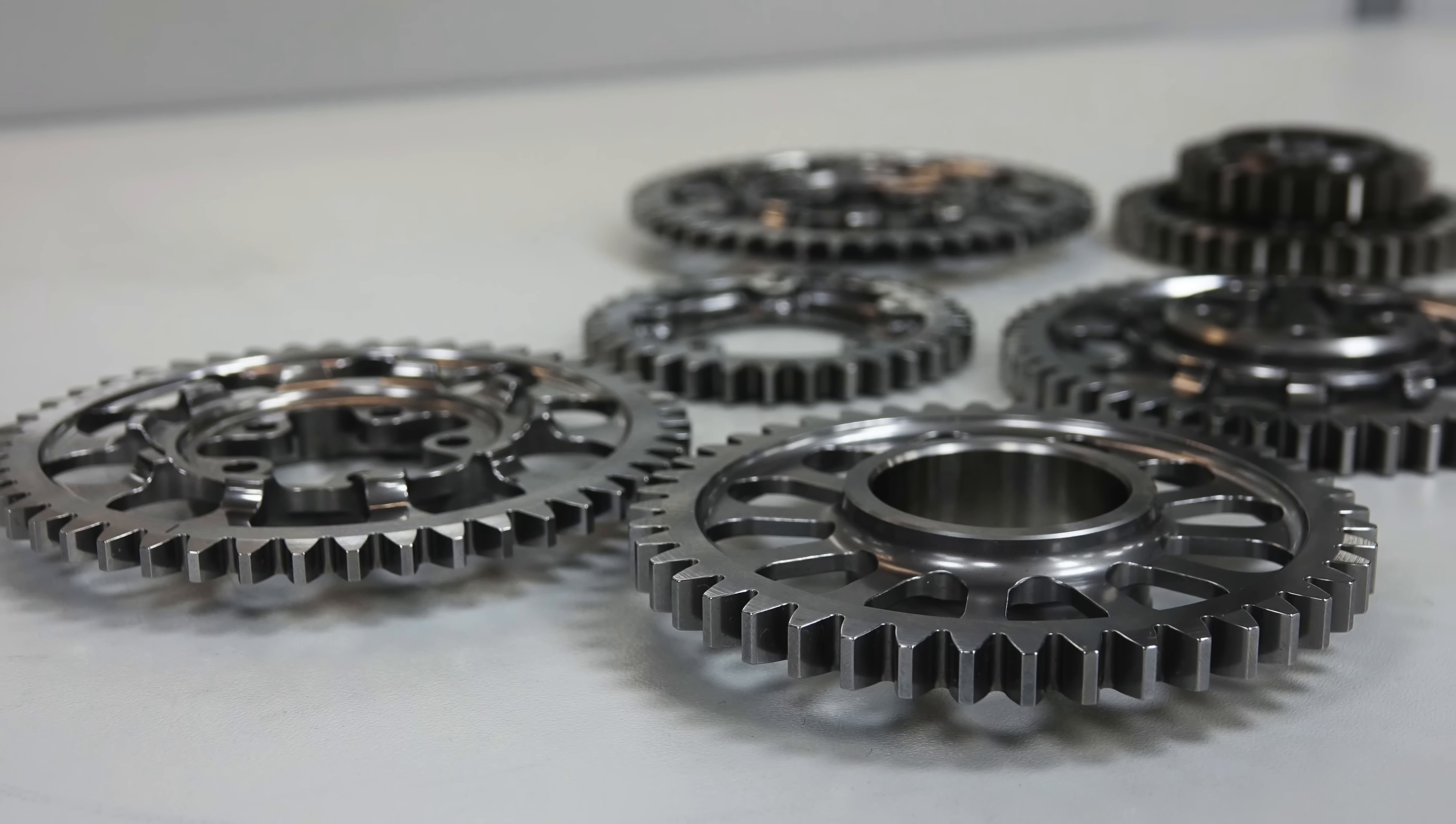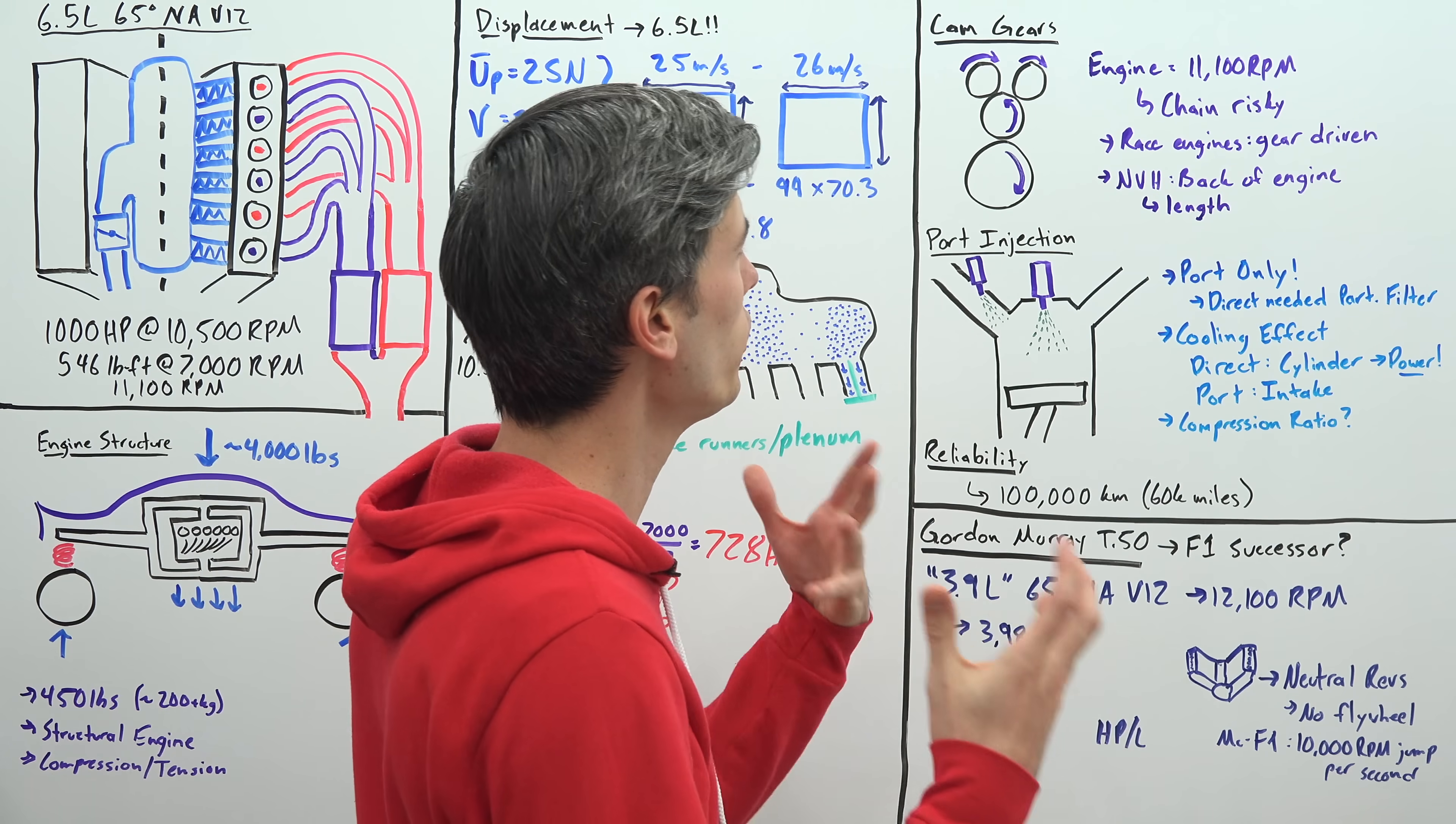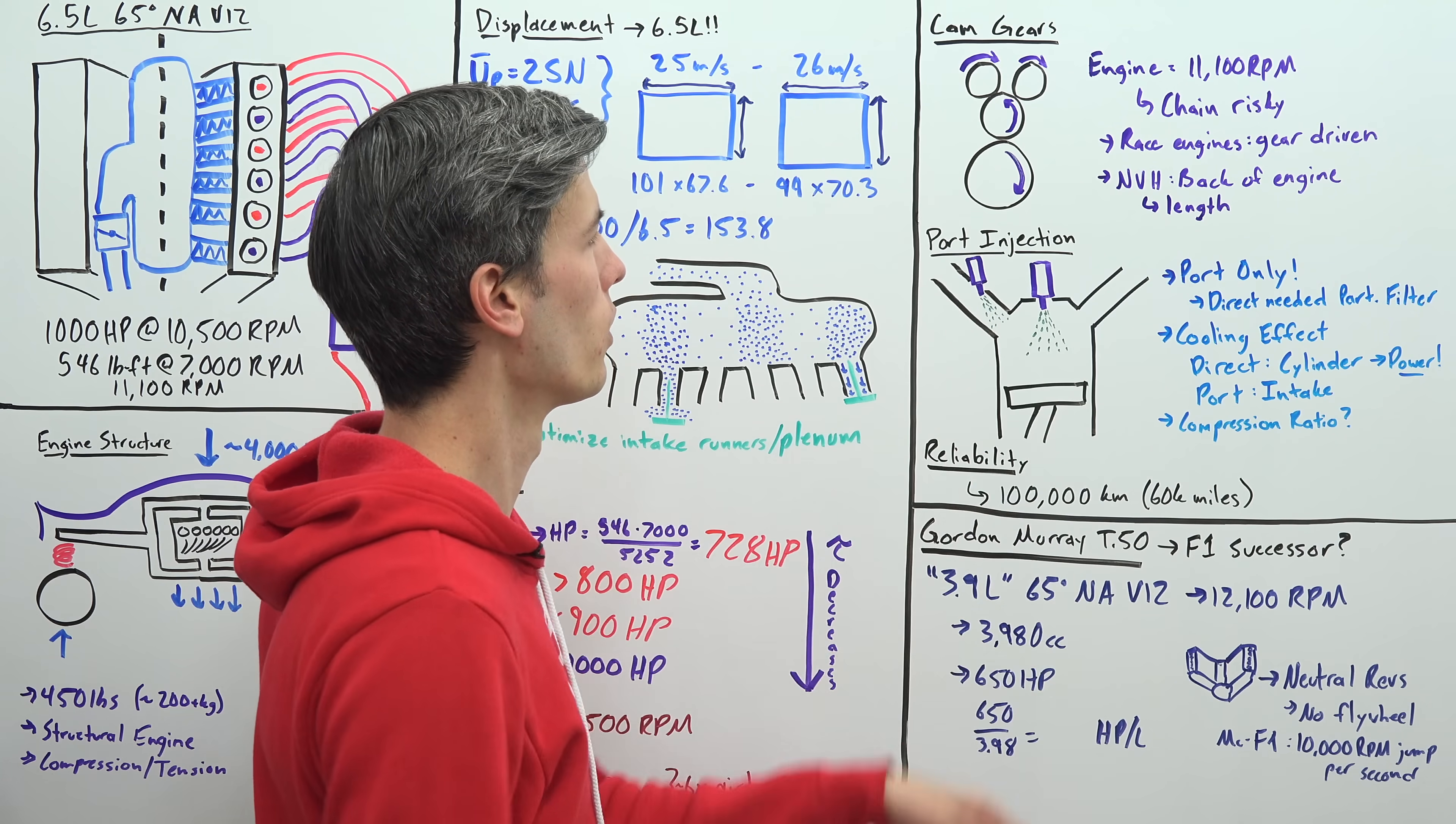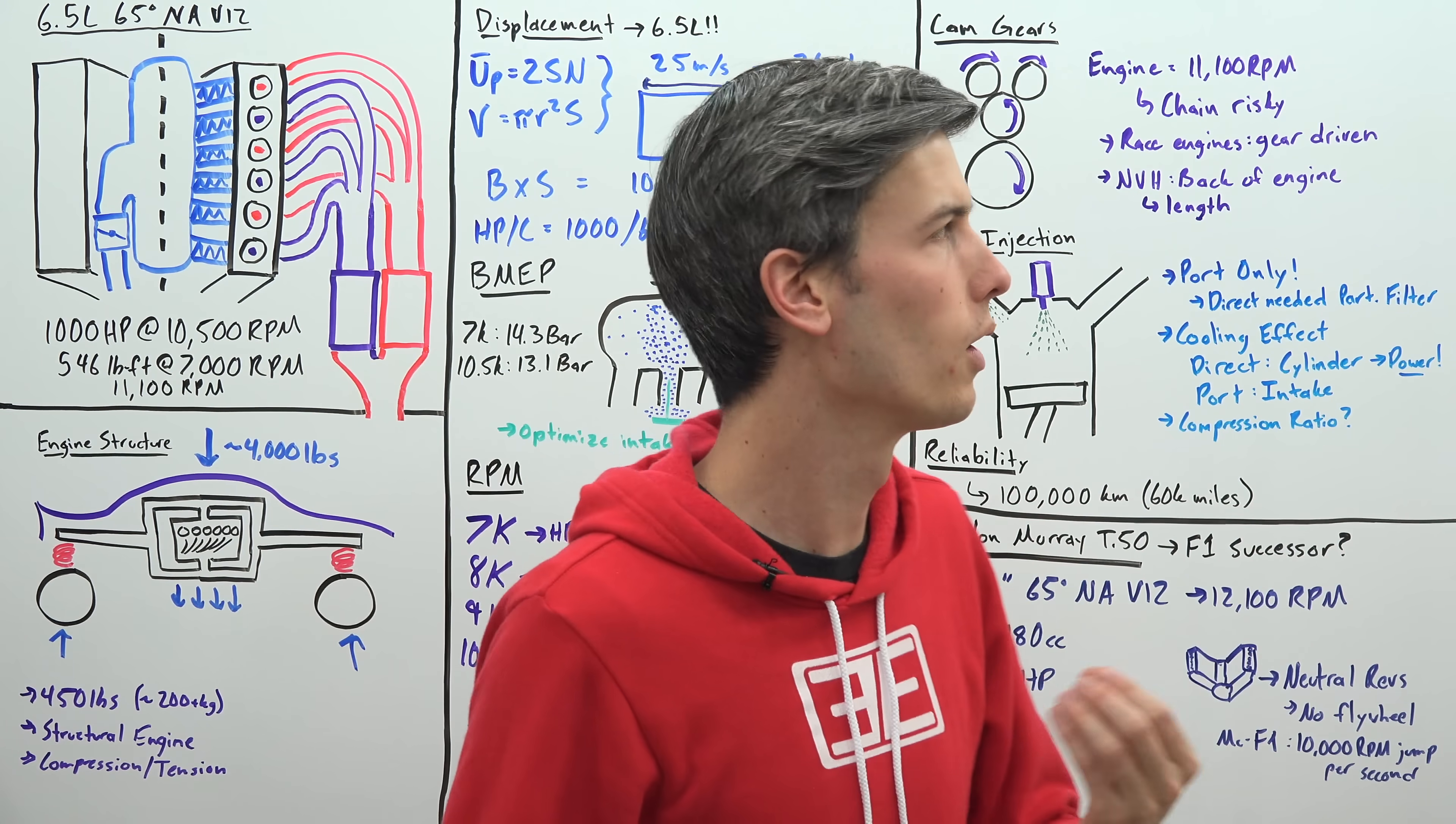Another interesting feature of this engine is that the camshafts are actually gear driven rather than using a timing belt or a timing chain and this simply has to do with how high the thing is revving. So it's revving to 11,100 rpm, using a chain at those speeds can be a bit risky so it uses a gear driven system. So ultimately you have your crankshaft which will eventually work its way to the camshaft, the camshafts will be rotating at half the speed of that crankshaft. So this is actually fairly common for race engines, it's just less common with road engines.